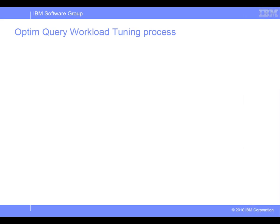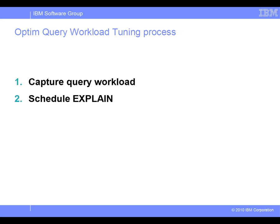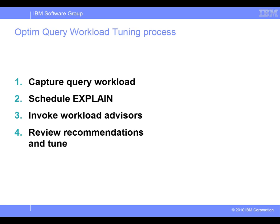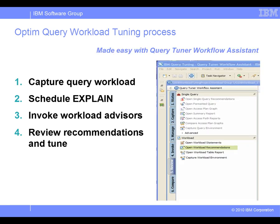There are four basic steps in the Query Workload Tuning process. First, capture a query workload containing SQL statements for analysis and tuning. Second, schedule and explain to collect statistics information for all SQL statements in the workload. Third, invoke the Workload Advisors for analysis and recommendations on performance improvement. Finally, review recommendations, tune the workload using generated scripts, and revise the SQL statements based on the recommendations. All these steps are made easy with the Query Tuner Workflow Assistant in the new interface of the Optum Query Workload Tuner product.